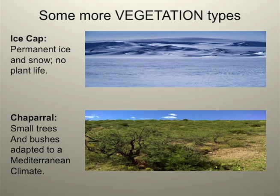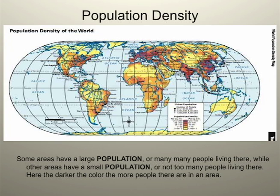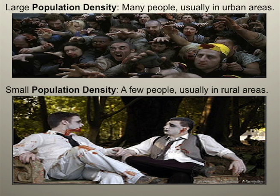Would you like to stay in an area with no vegetation during a zombie invasion? This map shows population density. Population is how many people live in a certain area. On this map, the darker the color, the more people live in a certain area. A large population density has many, many people in a small area, while a small population density only has a few people in a very large area.